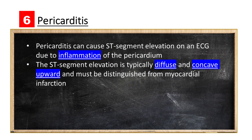Pericarditis can cause ST segment elevation on an ECG due to inflammation of the pericardium. The ST segment elevation is typically diffuse and concave upward, and must be distinguished from myocardial infarction.